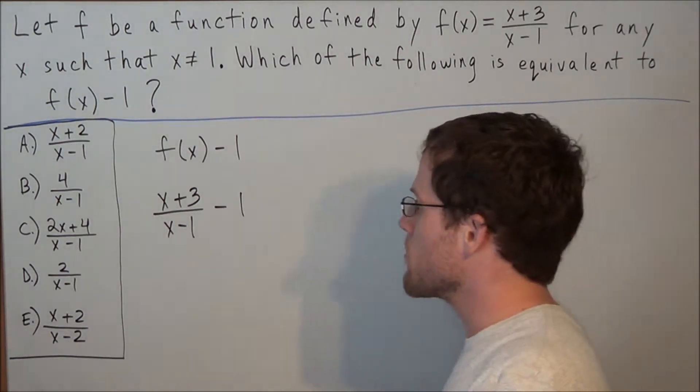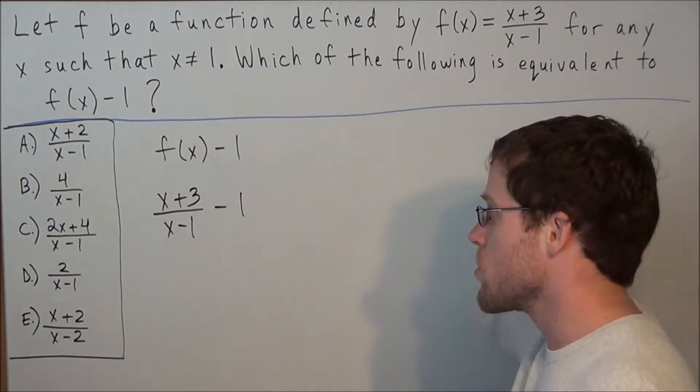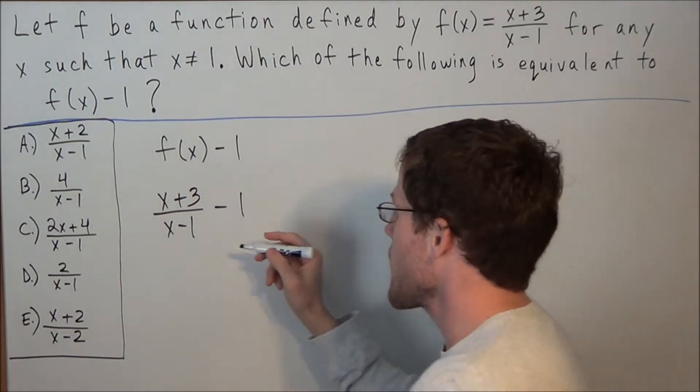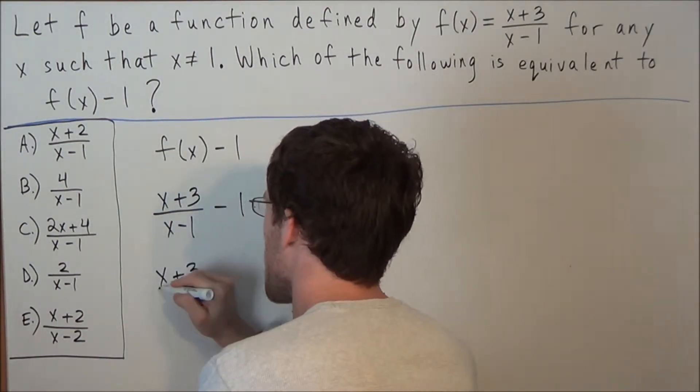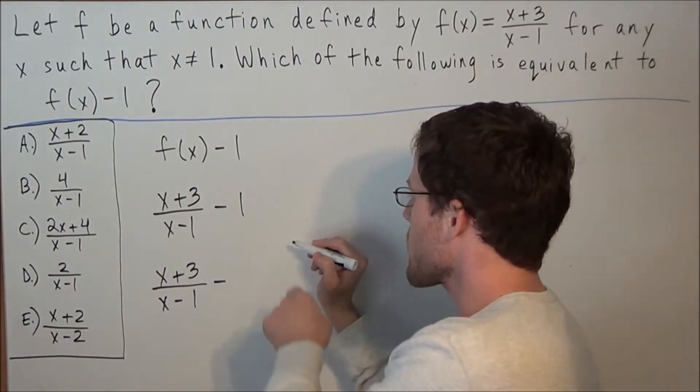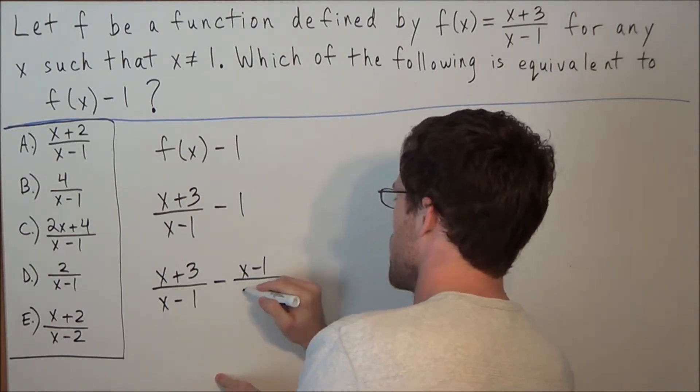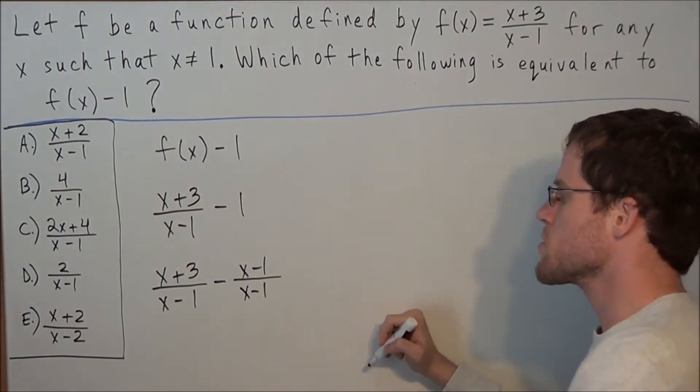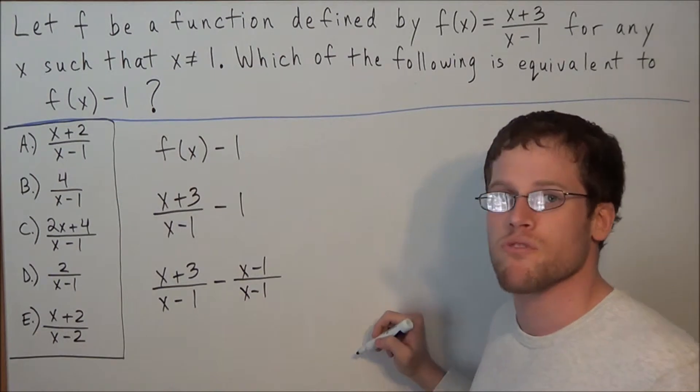But with these problems in general, whenever we're subtracting a fraction and a whole number, the goal is to turn the whole number into a fraction with a matching denominator. We have x plus 3 over x minus 1, but instead of writing minus 1, we're going to express 1 as x minus 1 over x minus 1. The reason why we could do this is because when we have the same quantity in the numerator and denominator, that fraction reduces to 1.